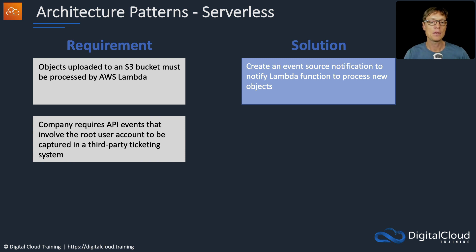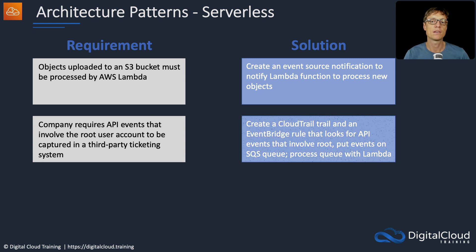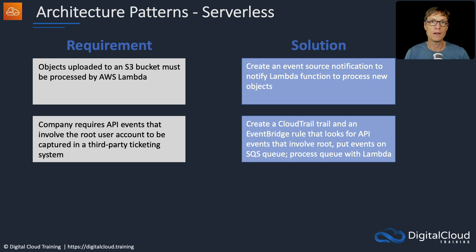A company requires API events involving the root user account to be captured in a third-party ticketing system. For this, you might create a CloudTrail trail and an EventBridge rule that looks for API events involving root — as we did in the hands-on lessons. You could then put the events into a queue, so the target for the EventBridge rule is a queue, and then process the queue with Lambda.